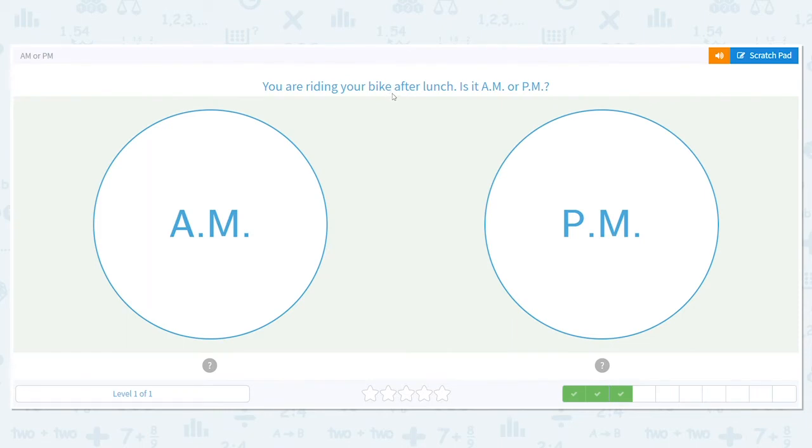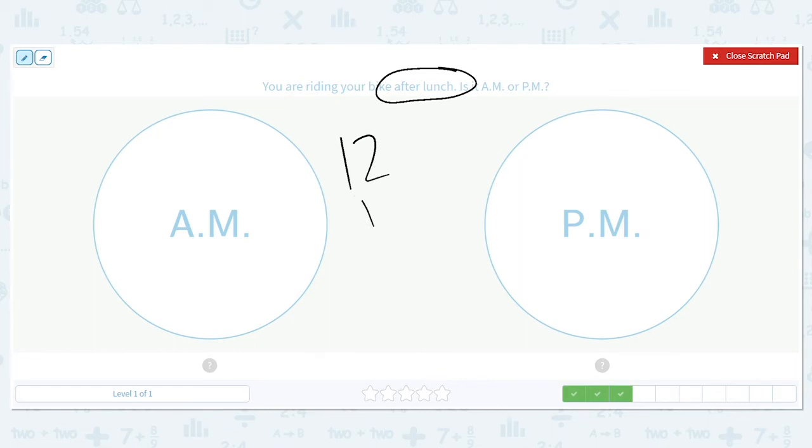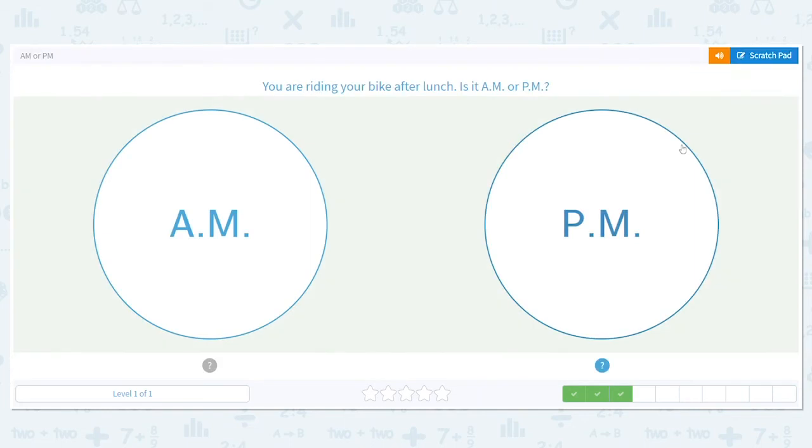You're riding your bike after lunch. Is it A.M. or P.M.? Okay, keywords here: after lunch. Lunch is typically around 12 o'clock P.M. So if you're riding your bike after lunch, would that be A.M. or P.M.? P.M.